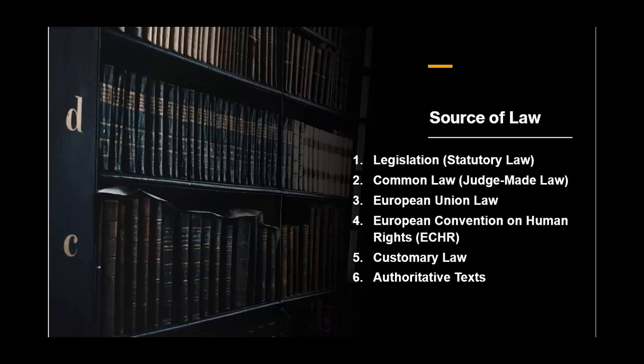Number two: Common law — judge-made law. Common law is developed by judges through decisions made in individual court cases. These decisions set precedents that future cases will follow, ensuring consistency and predictability in the law. A classic example is the case of Donoghue v Stevenson from 1932, which established the modern law of negligence, making it clear that manufacturers owe a duty of care to the people who use their products.